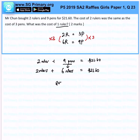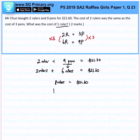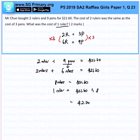That gives us 8 rulers. So 8 rulers will be $21.60, and 1 ruler will be $21.60 divided by 8, which gives us $2.70. That is the answer for this question.